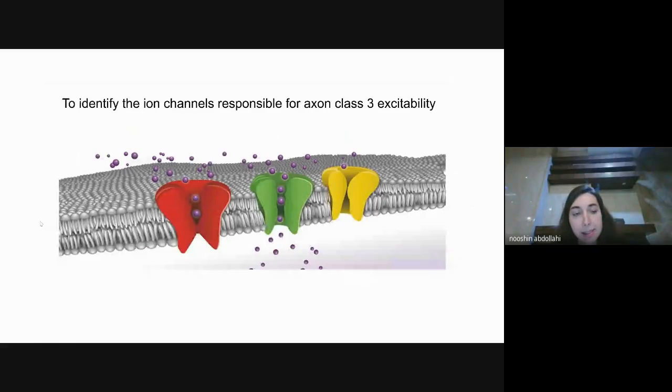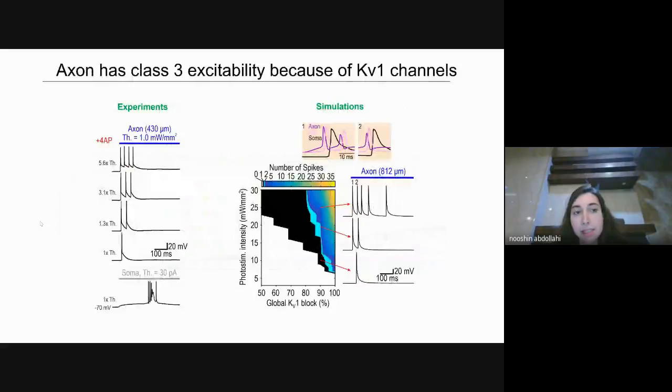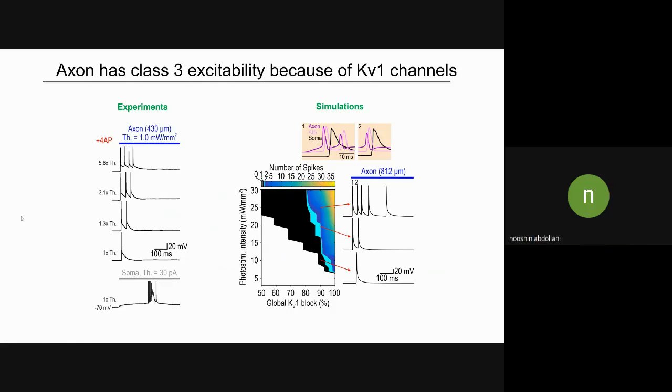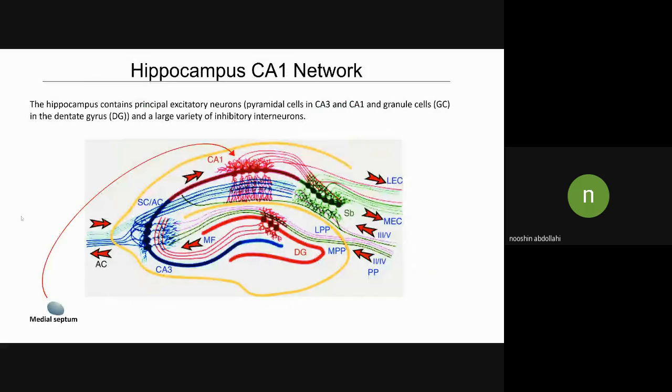As the next step, we wanted to identify the ion channels responsible for axon class 3 excitability. And we discovered that axon has class 3 excitability because of KV1 channels. In both experiments and simulations, after blocking KV1 channels, axon starts to spike repetitively. So with this model in hand, I want to build the hippocampus CA1 network.